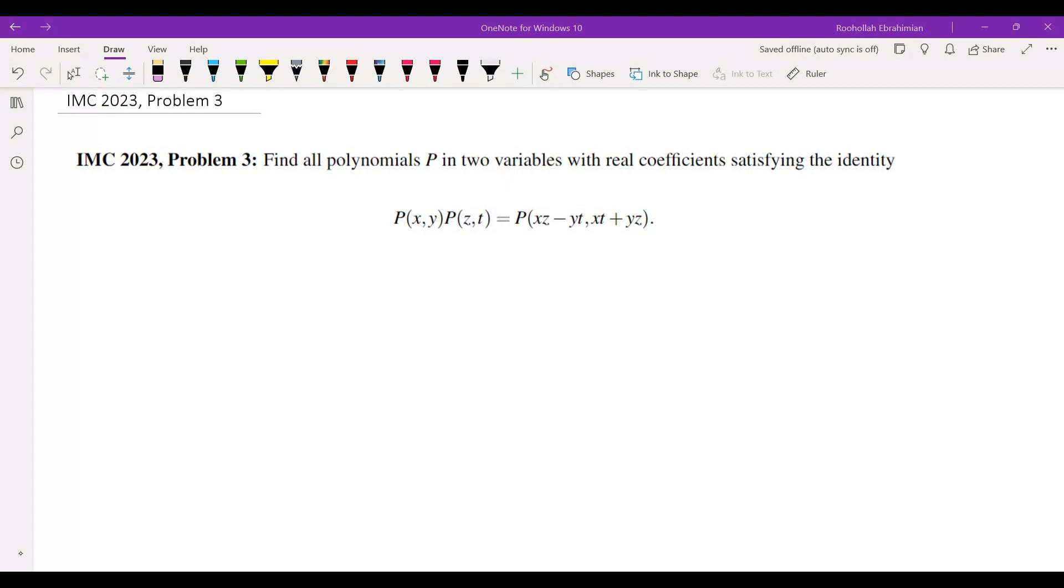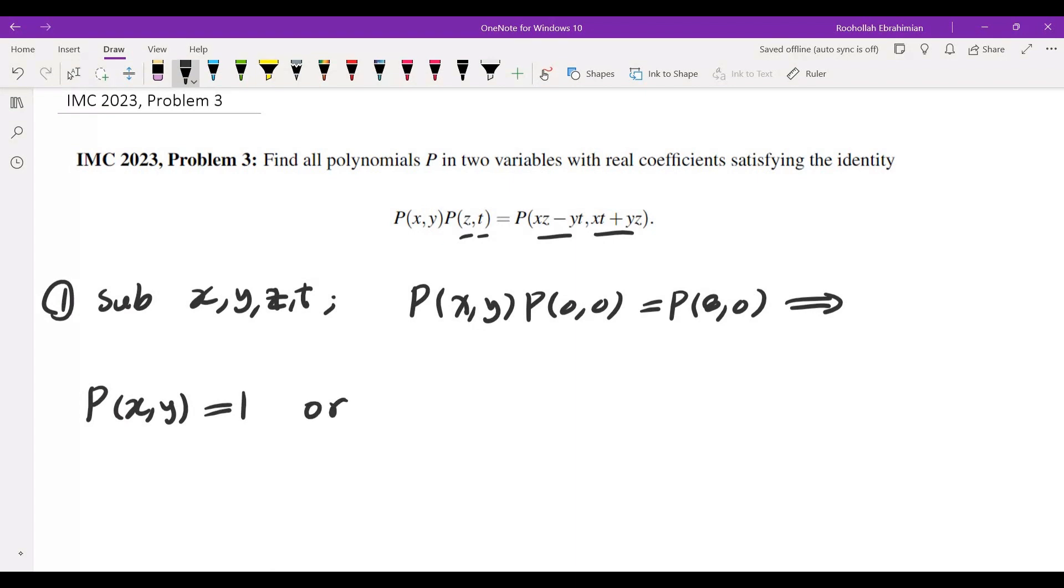So I had two different approaches to this problem. The first one was substitute X, Y, Z, T with some values and then obtain some equality. So the simplest thing would be to substitute Z and T by zero so that I can kill these four components. So I would get P of X comma Y P of 0 comma 0 is equal to P of 0 comma 0. So the result of that would be two things.